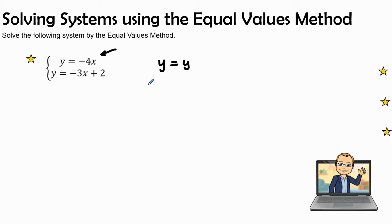In this situation, we will see y is equal to negative 4x, so we're going to put that on the left-hand side. And we're going to set it equal to the second equation where it says y is equal to negative 3x plus 2. This equation has variables on both sides, so let's solve this equation for the variable x.